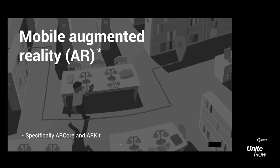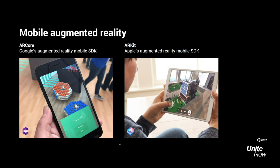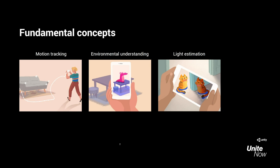Now let's talk a little bit about mobile augmented reality. We're really going to be discussing ARKit and ARCore. ARCore is Google's augmented reality SDK, available on the Android mobile platform, and ARKit is Apple's augmented reality SDK, available on their mobile iOS platform as well as iPad tablet platform. Some of the fundamental concepts for mobile augmented reality are things like motion tracking, environmental understanding, and light estimation.